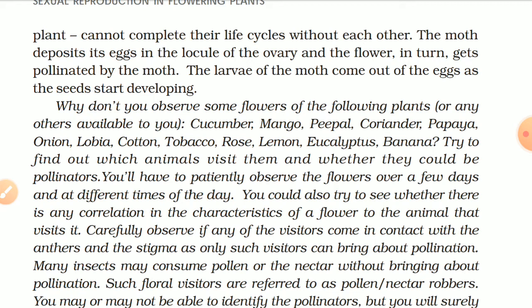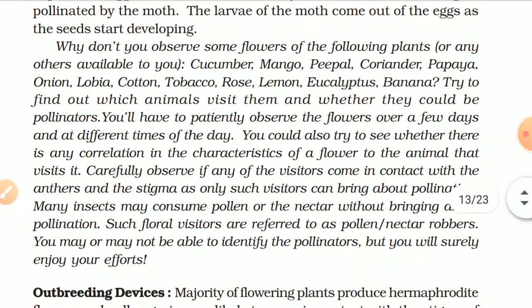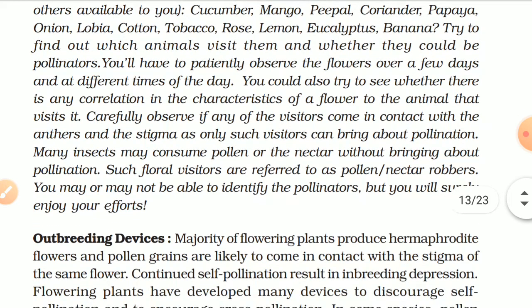The larva of the moth comes out of the eggs as the seed starts developing. Observe some flowers of the following plants: cucumber, mango, peeple, coriander, papaya, onion, lobia, cotton, tobacco, rose, lemon, eucalyptus, and banana. Try to find out which animals visit them and whether they could be pollinators. You will have to patiently observe the flowers over a few days and at different times of the day. Observe if any visitors come in contact with the anther and the stigma, as only such visitors can bring about pollination. Many insects may consume pollen and/or nectar without bringing about pollination; such floral visitors are referred to as pollen or nectar robbers.